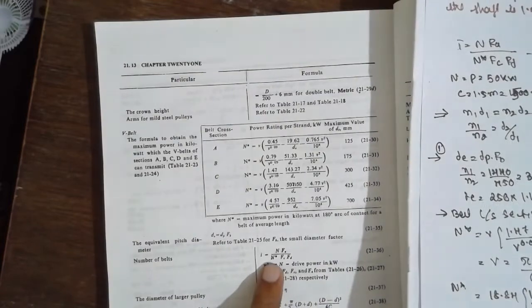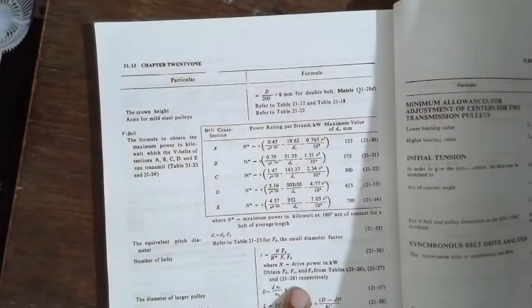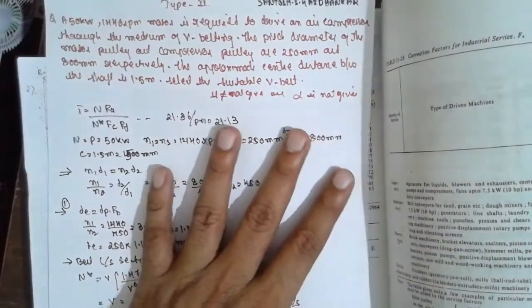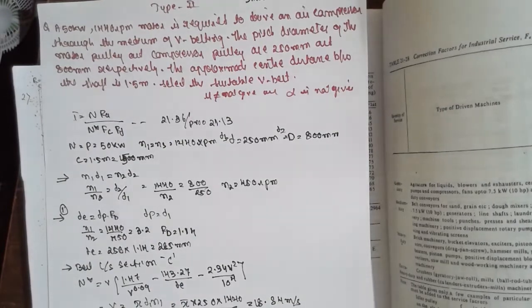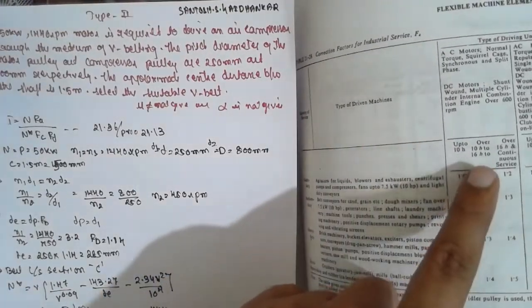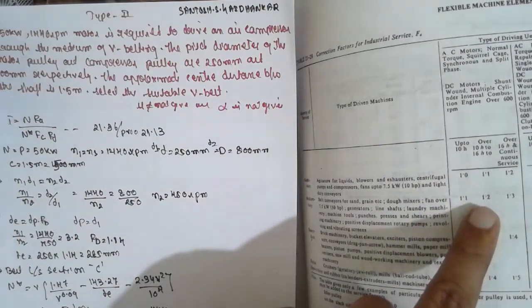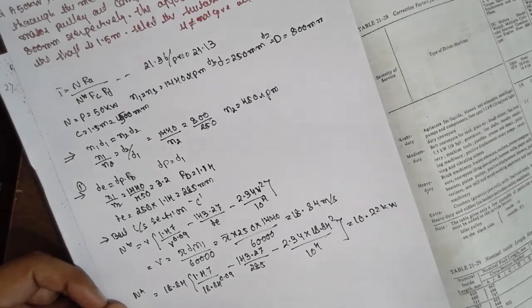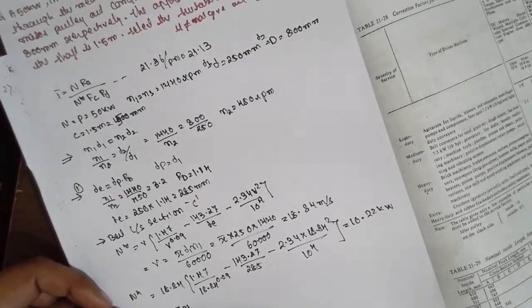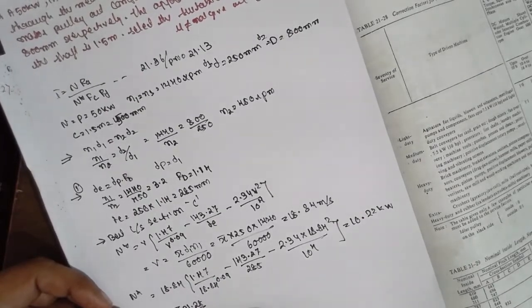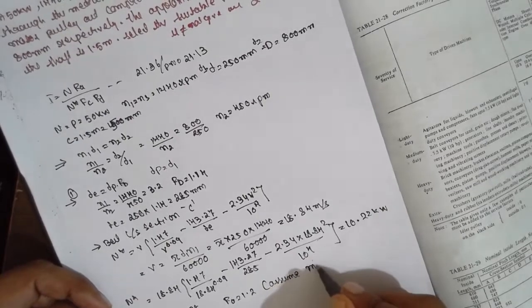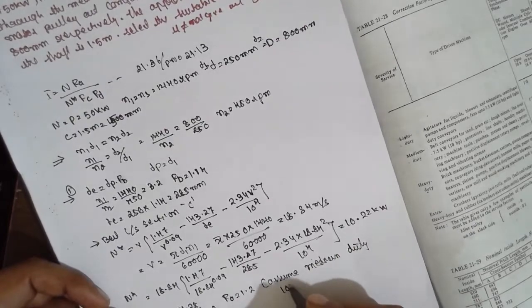N is known and N* = 10.22 kW is known. Now find FA. Referring to Table 21.28, page 21.50, FA is the service factor. In the exam, if not given, assume medium duty 10 to 16 hours — FA = 1.1.